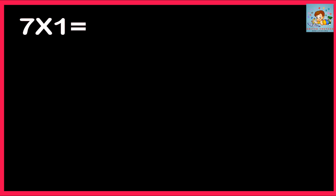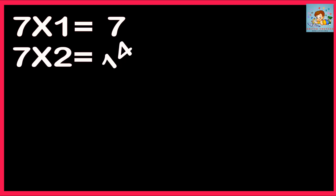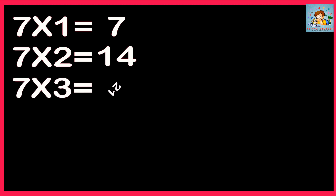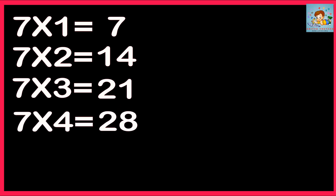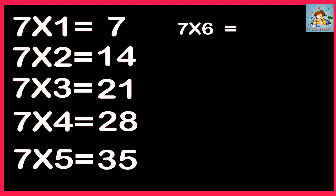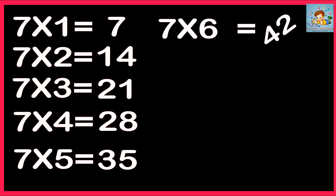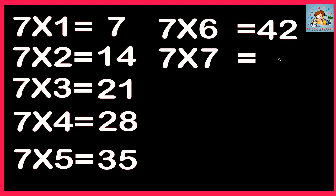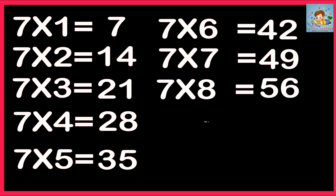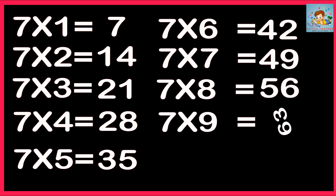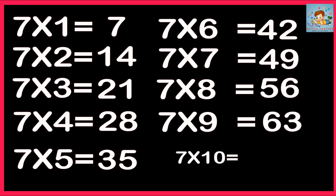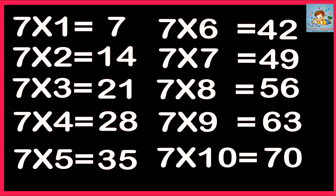7×1=7, 7×2=14, 7×3=21, 7×4=28, 7×5=35, 7×6=42, 7×7=49, 7×8=56, 7×9=63, 7×10=70.